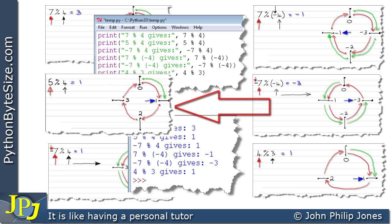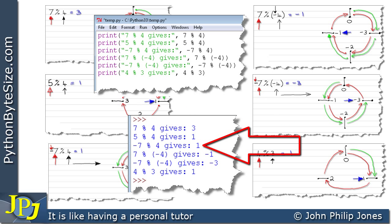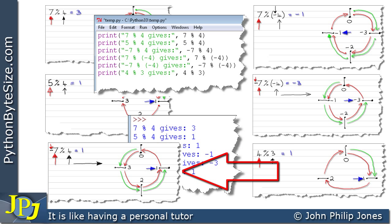Minus 7 modulus 4 gives 1, which is what we produced here when we did our sketches. This one here, 7 modulus minus 4 should give minus 1, which is what I worked out up here.